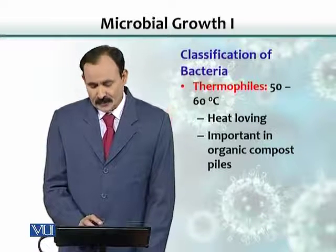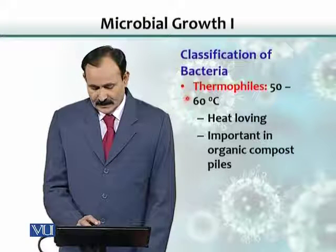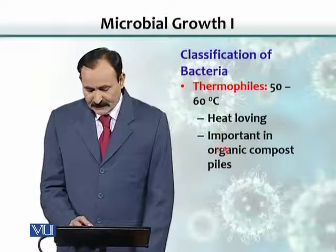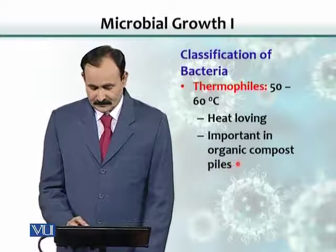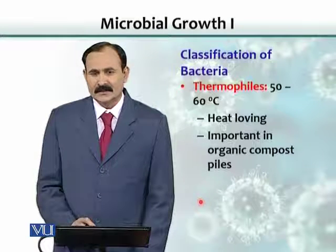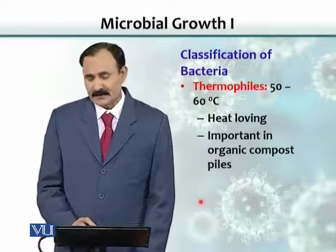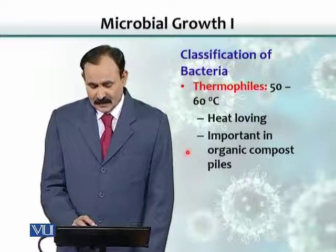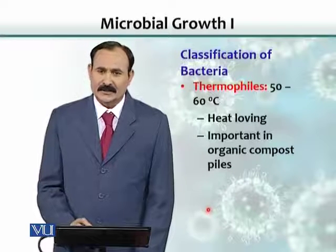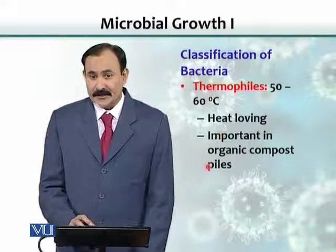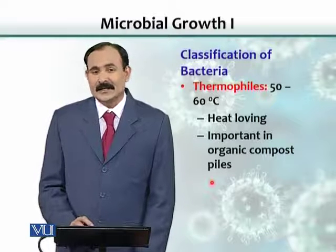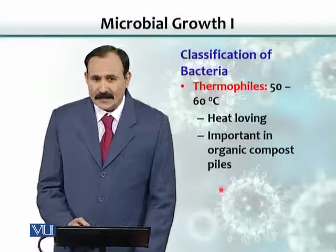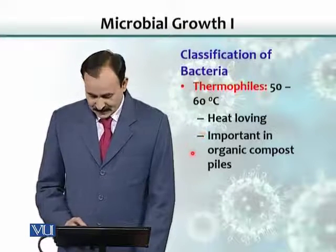The third group includes those that grow at higher temperatures, in the range of 50 to 60 degrees Celsius. They are very important in organic composting — waste matter from animals like dung, fecal material, dead animals, and plants can be degraded by these bacteria. When these organic compounds are decomposed, they generate a lot of heat, which can kill pathogenic or mesophilic bacteria. Composting is a useful, environmentally friendly activity.